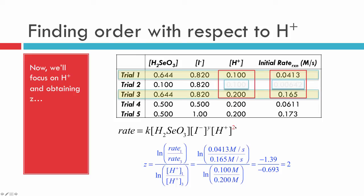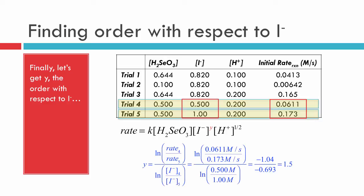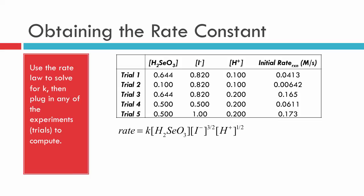Our rate law is now more complete — we have a first-order and a second-order component. The only thing left is y, which we find using trials four and five. The I⁻ concentration changes while the other concentrations stay the same, so changing I⁻ changes the rate. Plugging in the values gives y = 1.5, which is the same as three halves — a perfectly acceptable half-integer order. So the rate law is: rate = k[H2SeO3]¹[I⁻]^(3/2)[H⁺]².